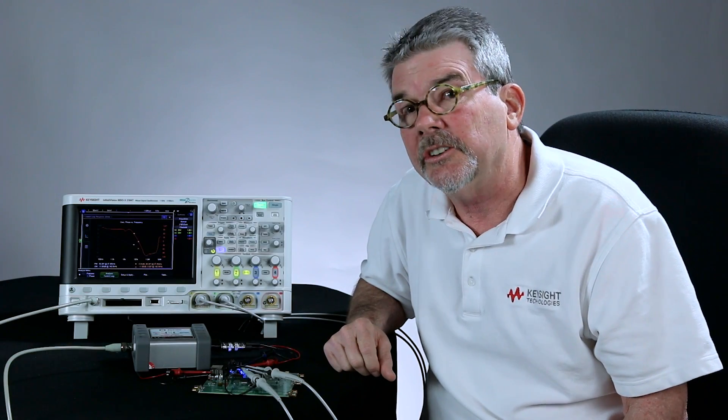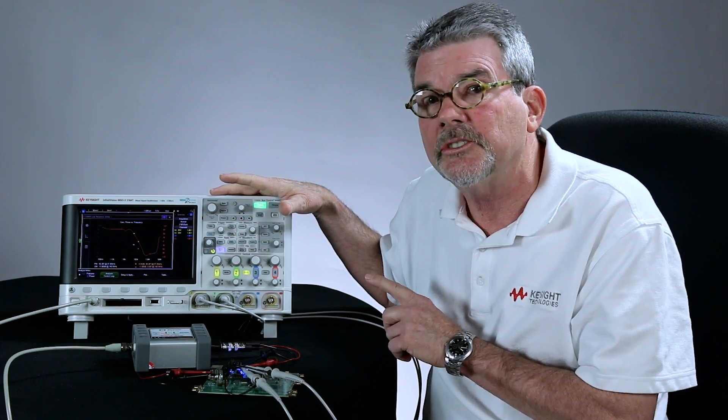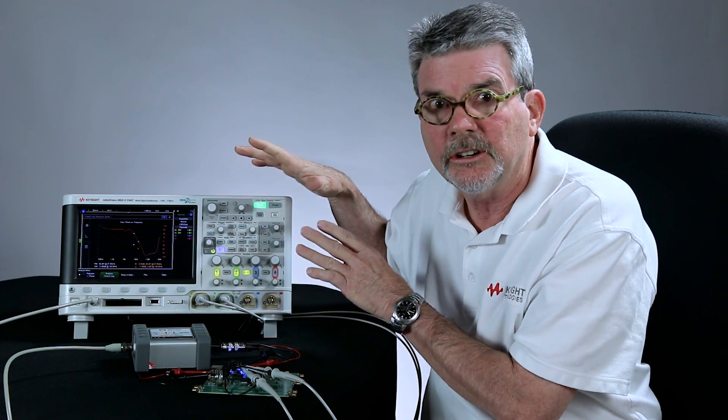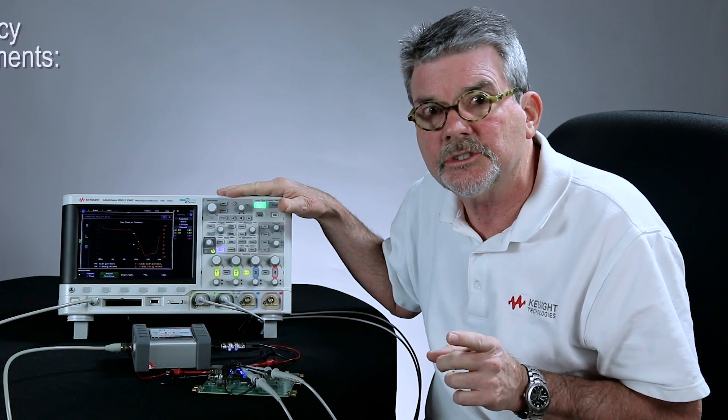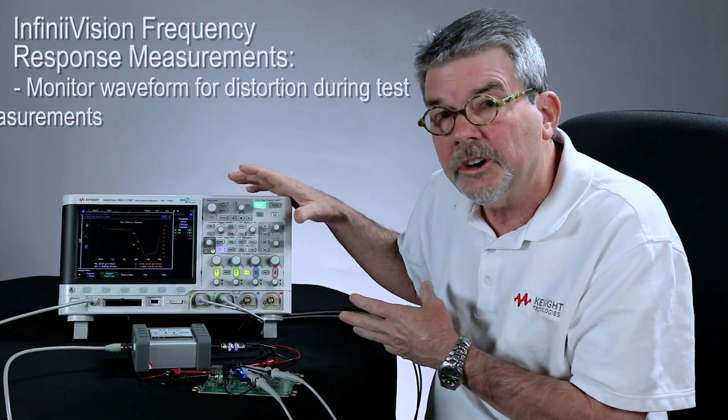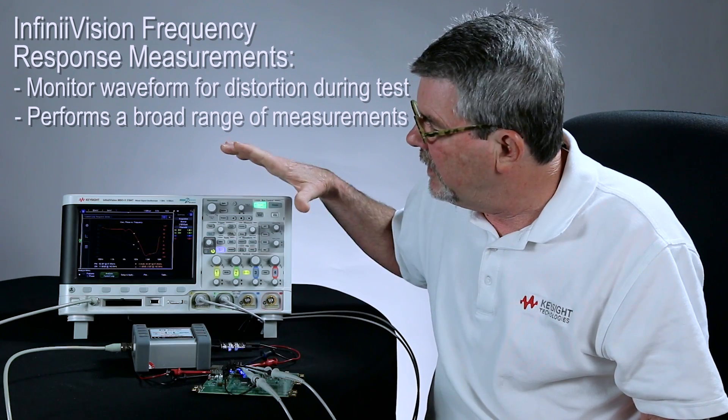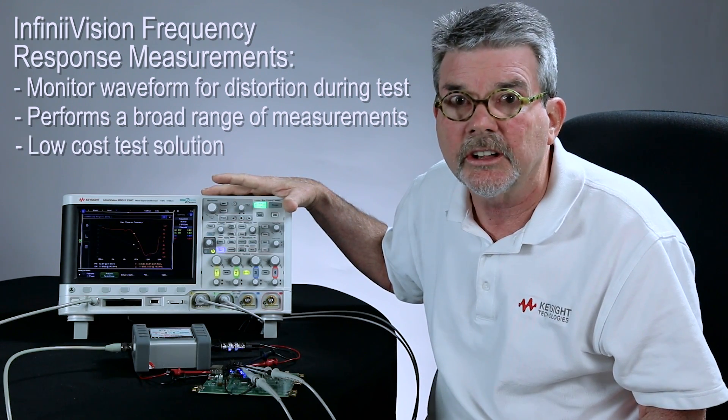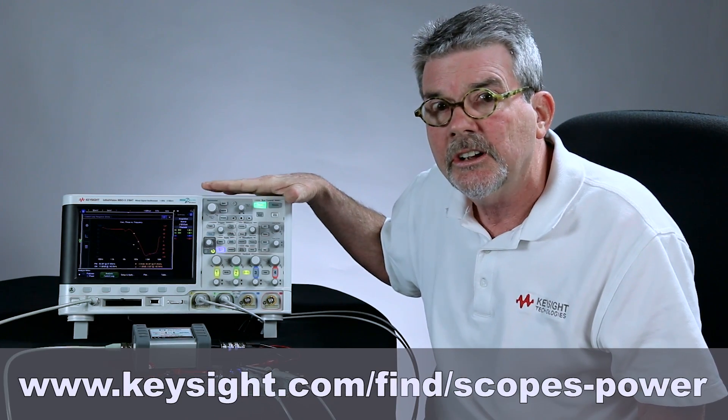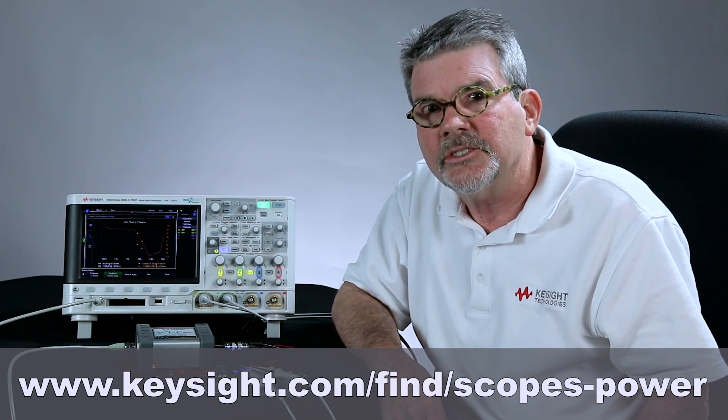As you've seen in this video, you can now perform frequency response measurements using a Keysight oscilloscope. Now these are the only scopes on the market that can perform these. There are some real key advantages of the measurement capabilities of this scope compared to other solutions. First of all, you can see the time domain waveform. See if there's distortion. You have one instrument can perform a broad range of power related measurements that you may need to characterize. And it's also a fairly inexpensive solution compared to a network analyzer. If you'd like to watch the other videos on power testing or download an application note on this particular application I showed today, go to the URL listed on your screen. And thanks for watching.